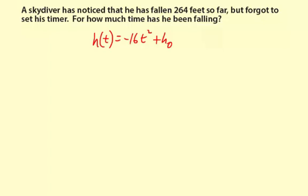Now in this case, it's been falling 264 feet, and for 4 seconds. So this output, h sub t, is actually 264.